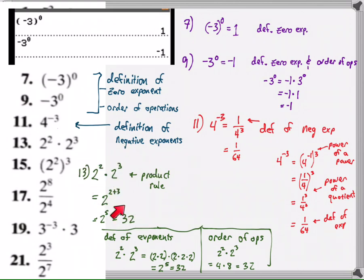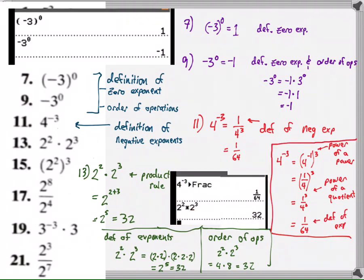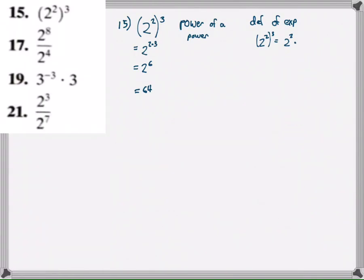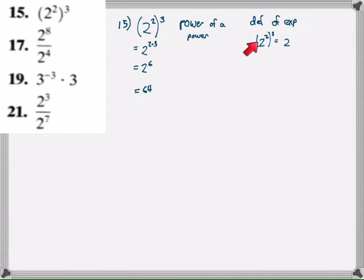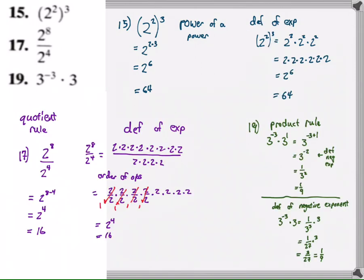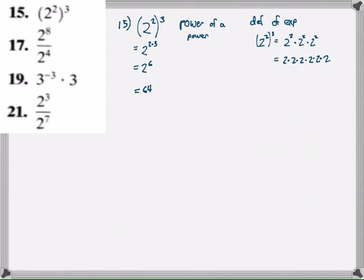For power of a power: 2 squared to the third is 2 to the sixth, which is 64. That's the shortcut. But where does it come from? According to the definition of exponents, 2 squared cubed is actually 2 squared times 2 squared times 2 squared. Then further by definition of exponents, each 2 squared becomes 2 times 2, giving six twos total — 2 to the sixth, which is 64. So why do we multiply the exponents? Because we have 3 sets of two twos, for a total of 6 twos.